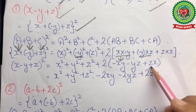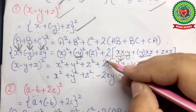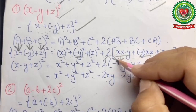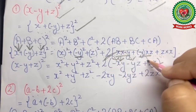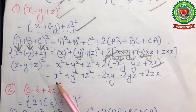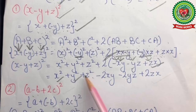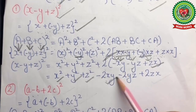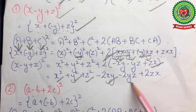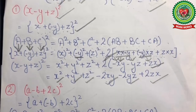Now we multiply 2 with all three terms inside the bracket. We get our final answer as x² + y² + z² - 2xy - 2yz + 2zx.